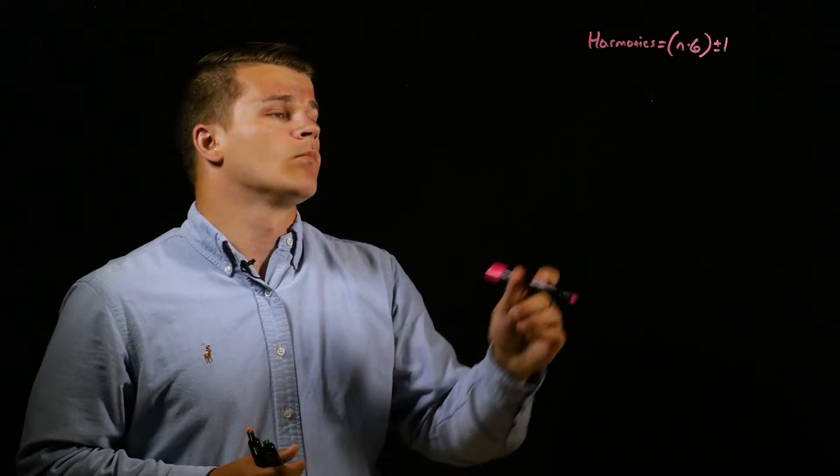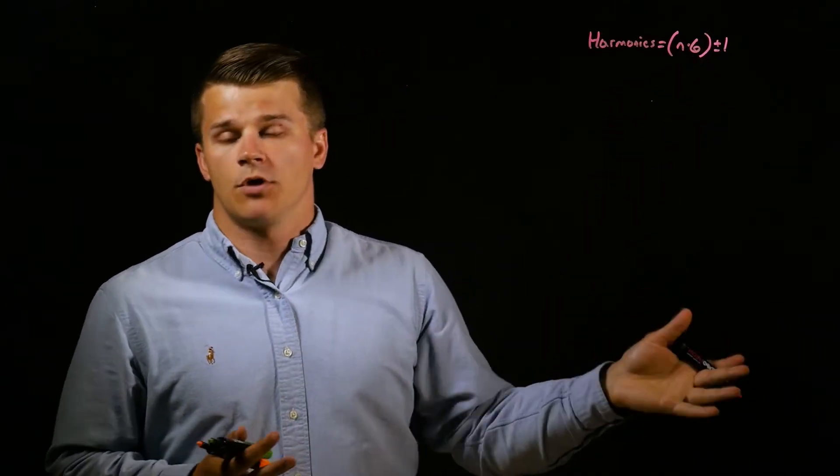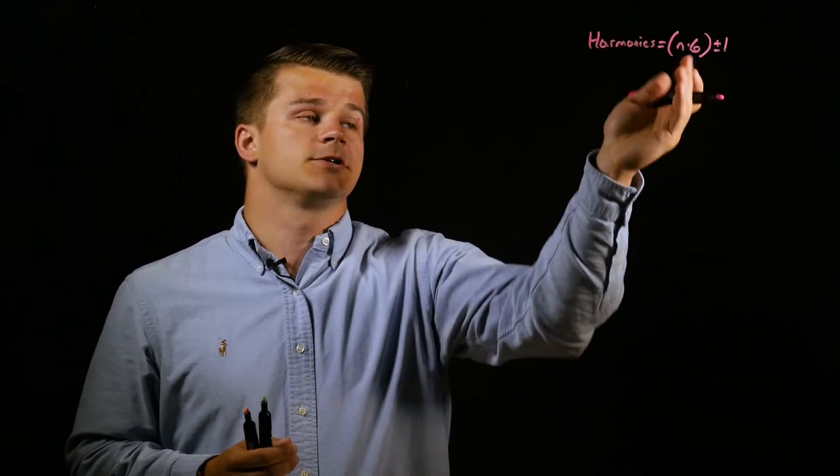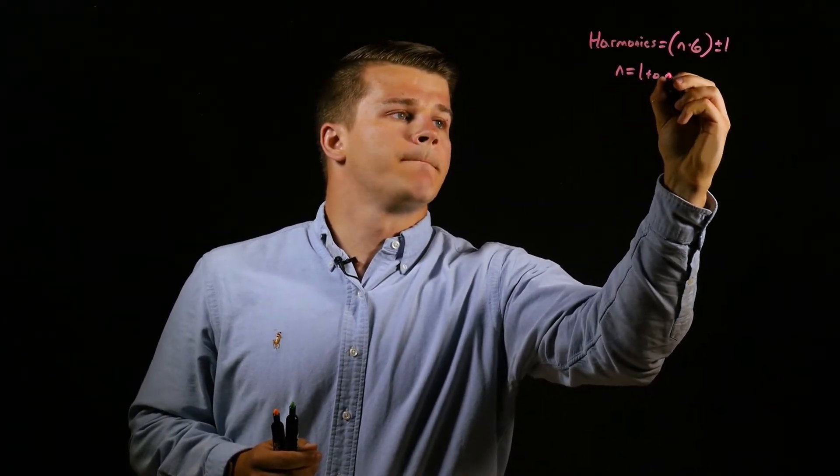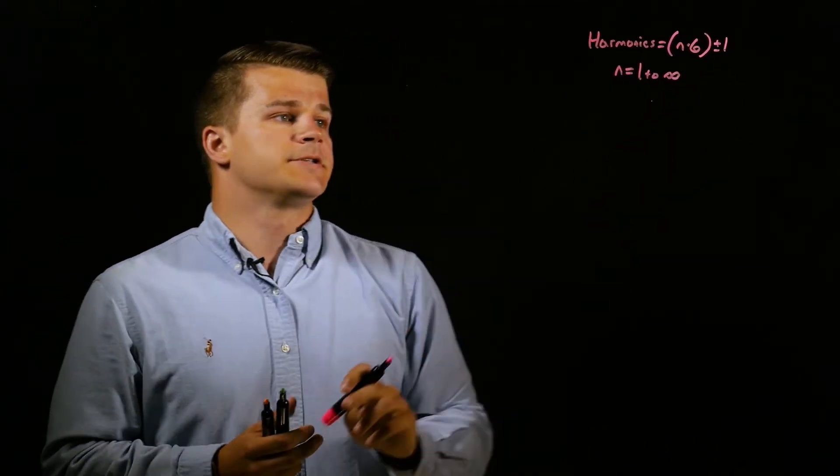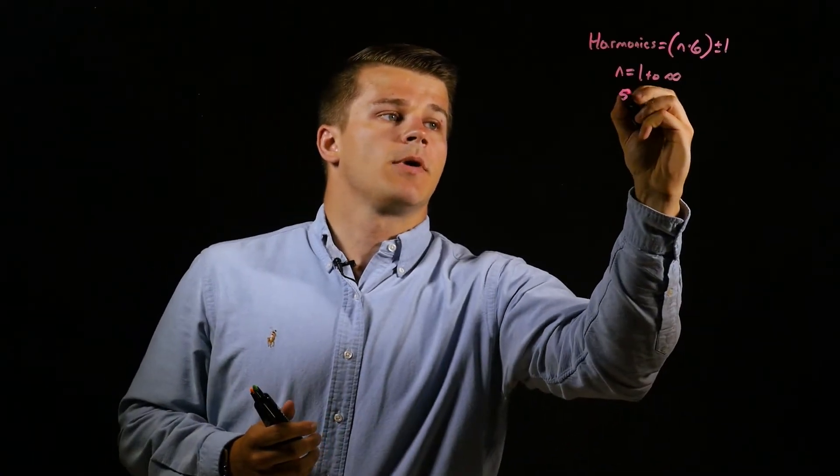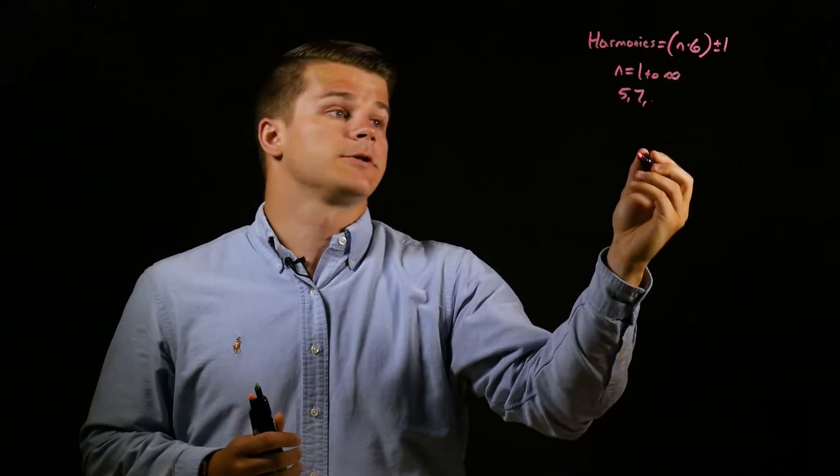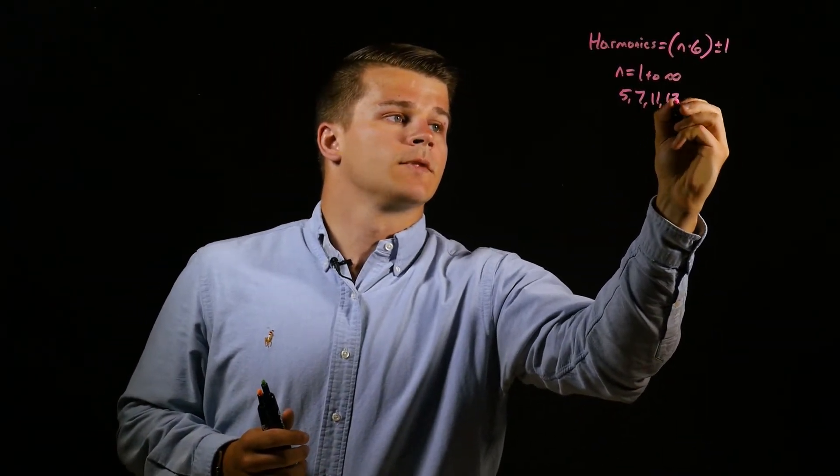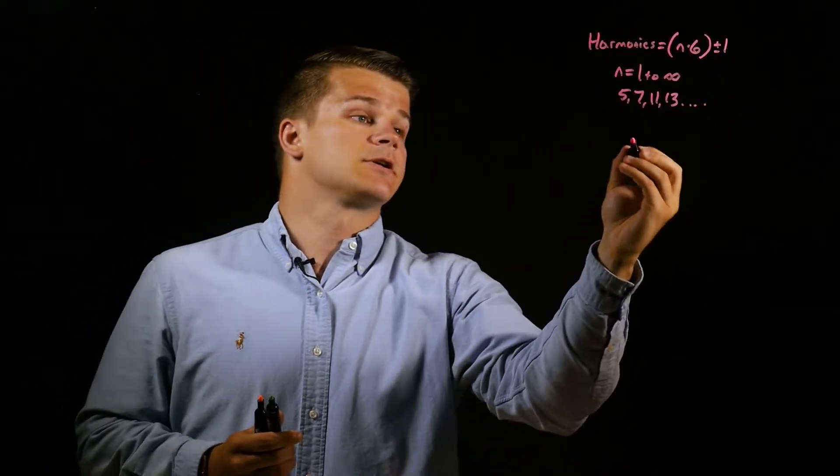Harmonics are integer multipliers of the fundamental frequency. Because our drive is a 6-pulse VFD, we would have a 6 here in this equation. But if you have a 12-pulse VFD, for example, you would replace this with a 12. And then n equals 1 to infinity. So for example, when n equals 1, we get 1 times 6 equals 6 plus or minus 1, so we get harmonics of 5 and 7. If n equals 2, we get 2 times 6 is 12, plus or minus 1 is 11 or 13. And this goes on and on. So these would be the harmonics in a KEB 6-pulse VFD.